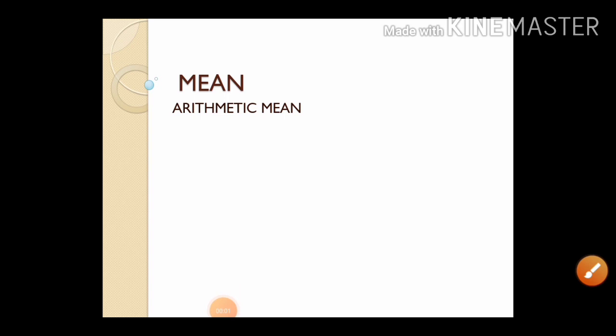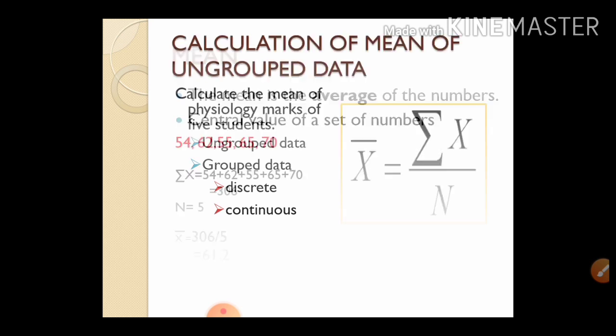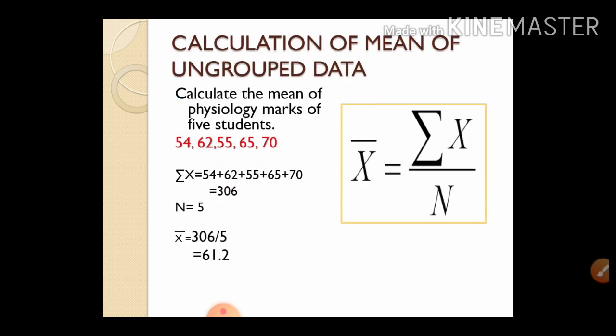Students, today let us discuss about mean. Arithmetic mean is the average of numbers — it indicates the central value of a set of numbers. In today's lesson we will see how to calculate mean for ungrouped data, grouped data discrete type, and continuous type.